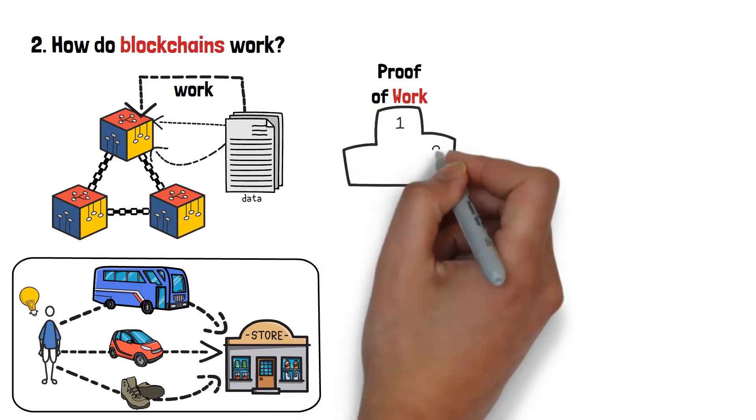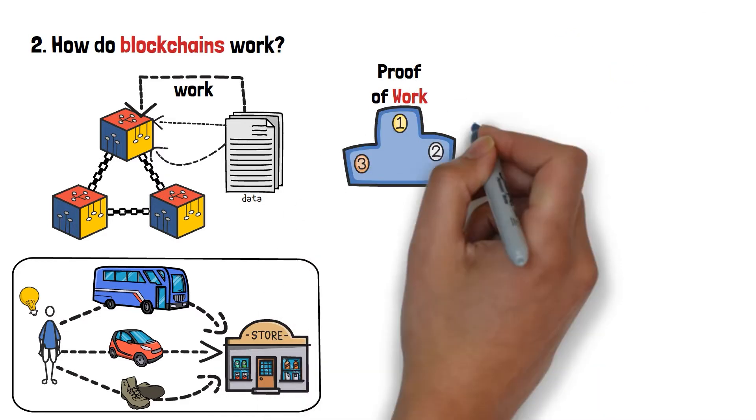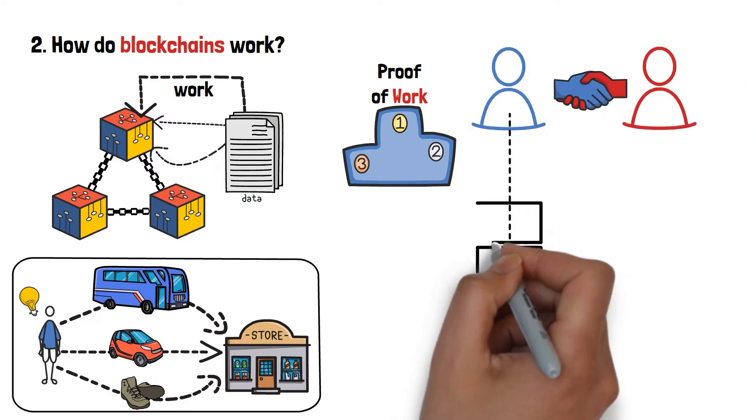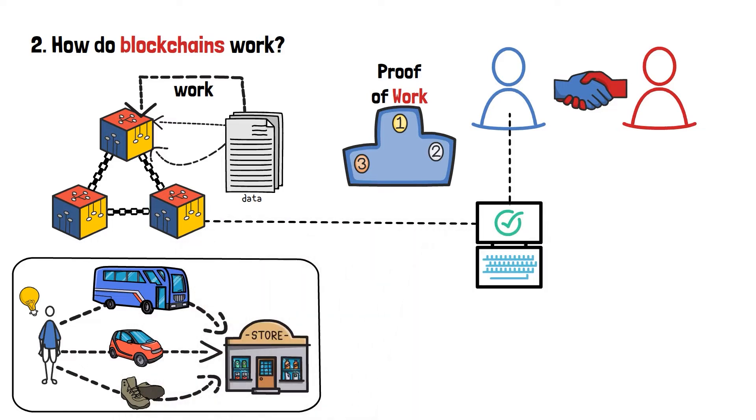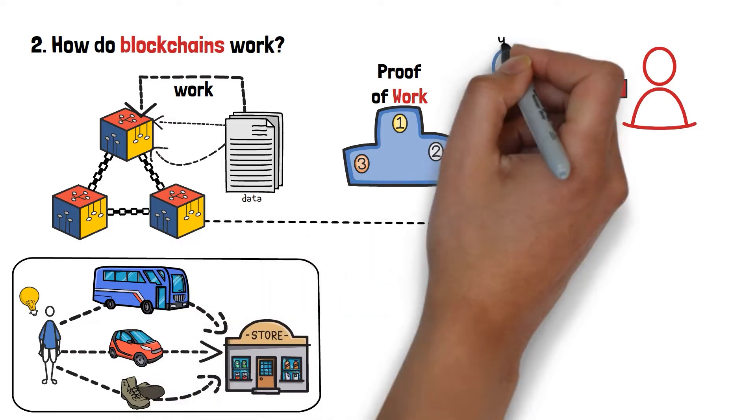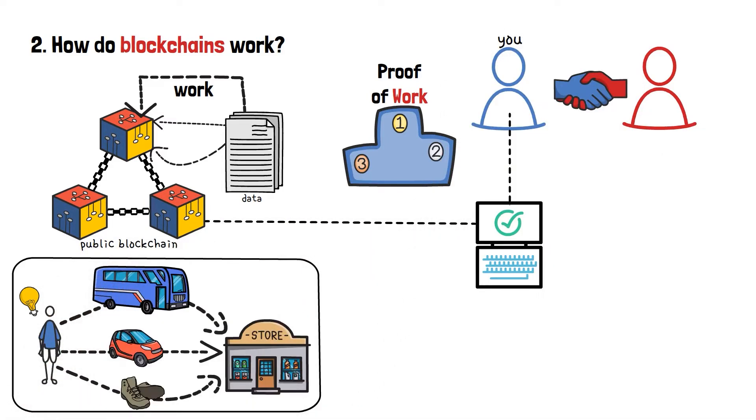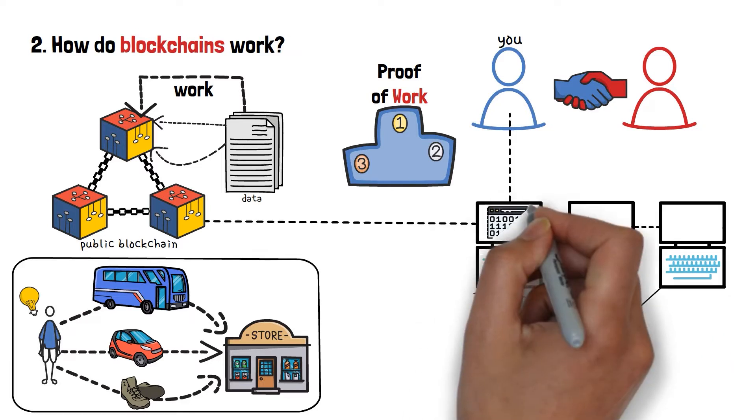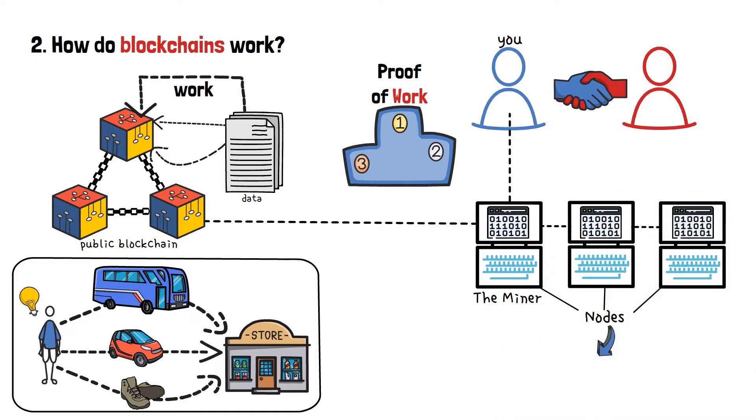So, the most popular method is called proof-of-work. Normally, once transactions are agreed between the users, they need to be approved before they are saved to a block in the chain. So, besides you and the public blockchain itself, we involve an extra element, the miner, a computer, or actually a mass of computers called nodes, that work to solve complex mathematical queries, to confirm those aforementioned transactions.